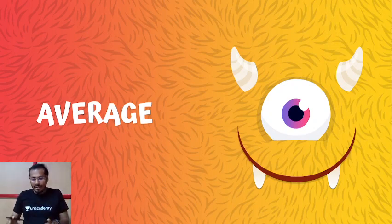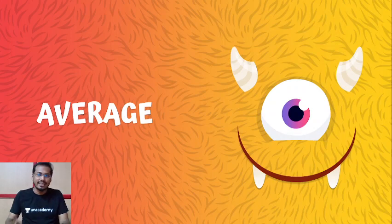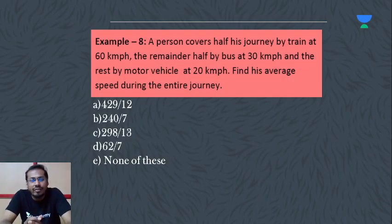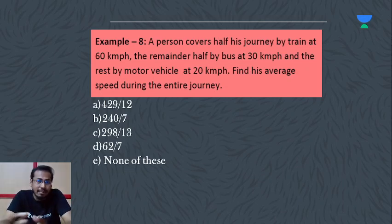In this session we will look at concepts of different types of questions in average. Question: A person covers half his journey by train at 60 km per hour, the remainder half by bus at 30 km per hour, and the rest by motor vehicle at 20 km per hour. Find his average speed during the entire journey.